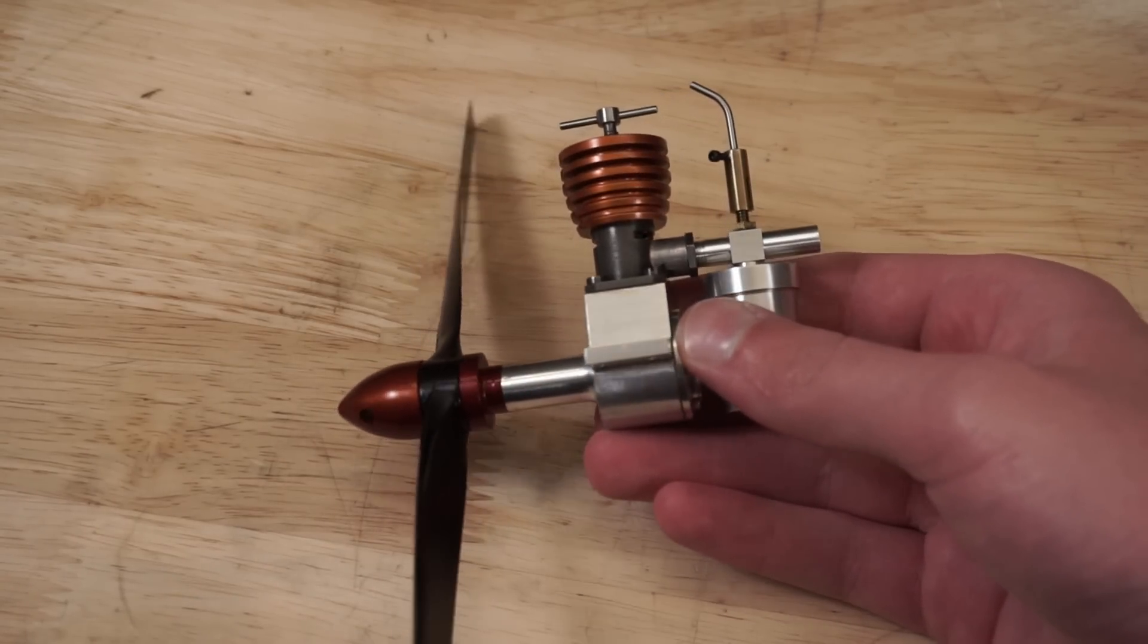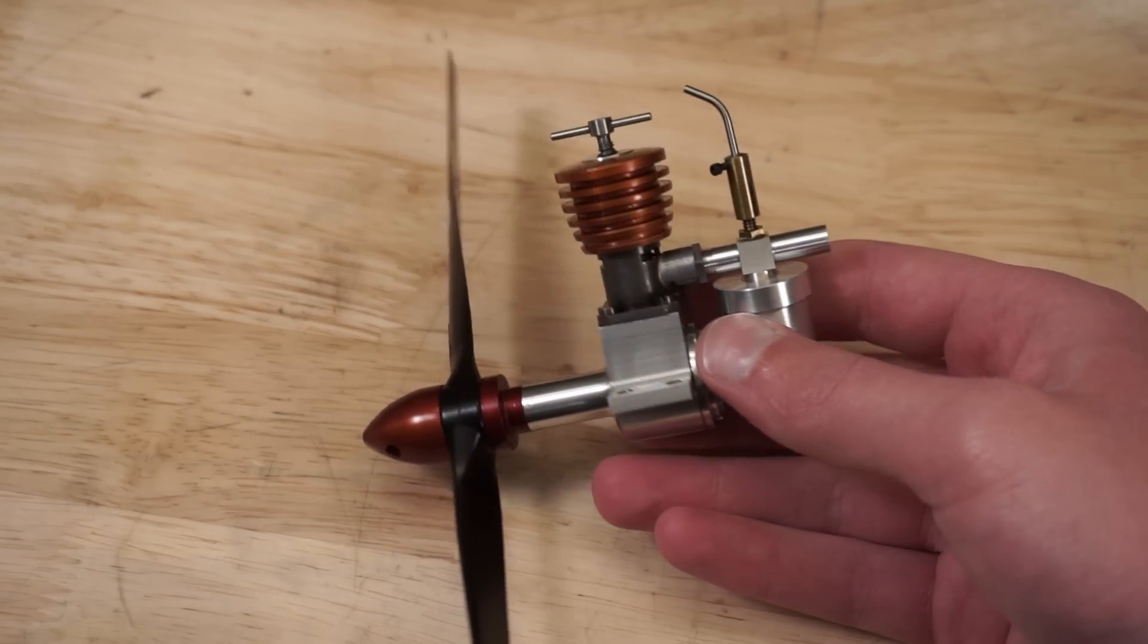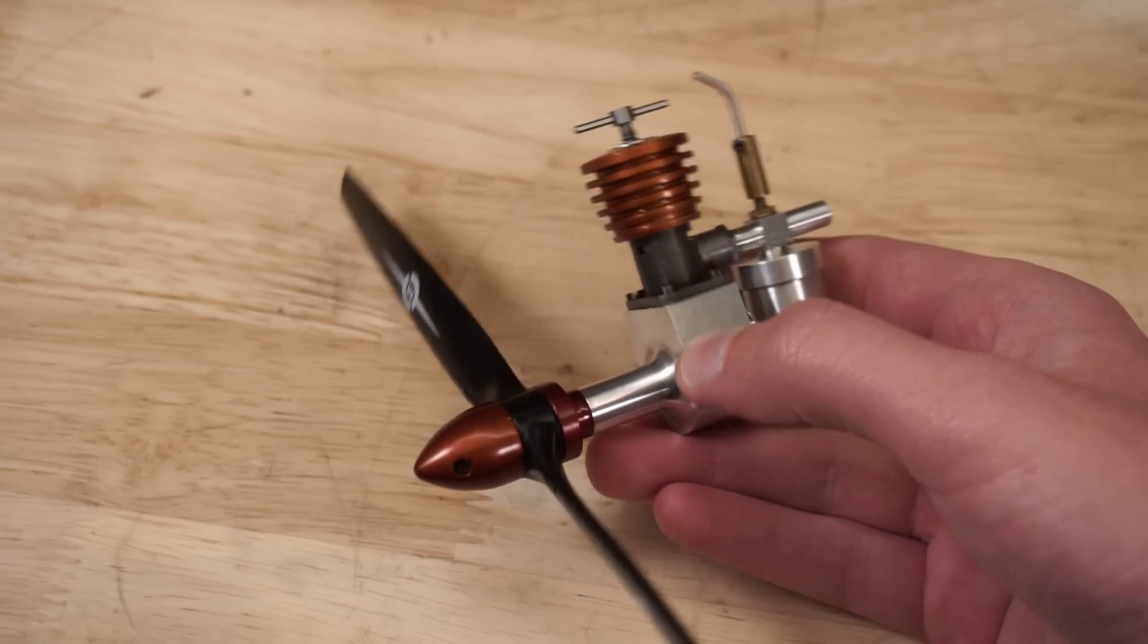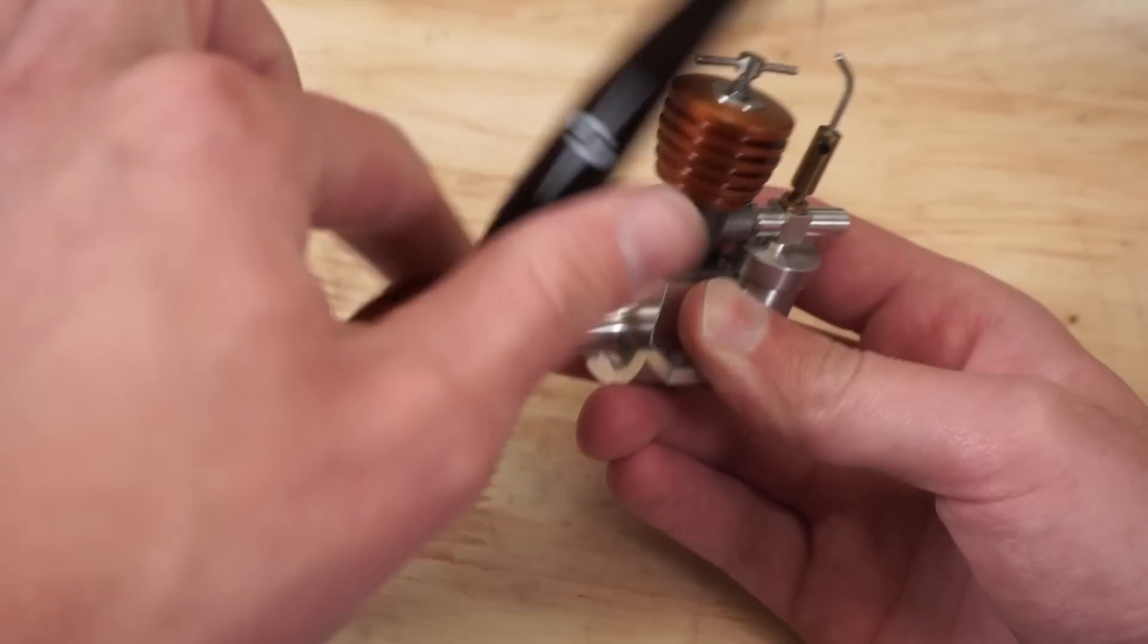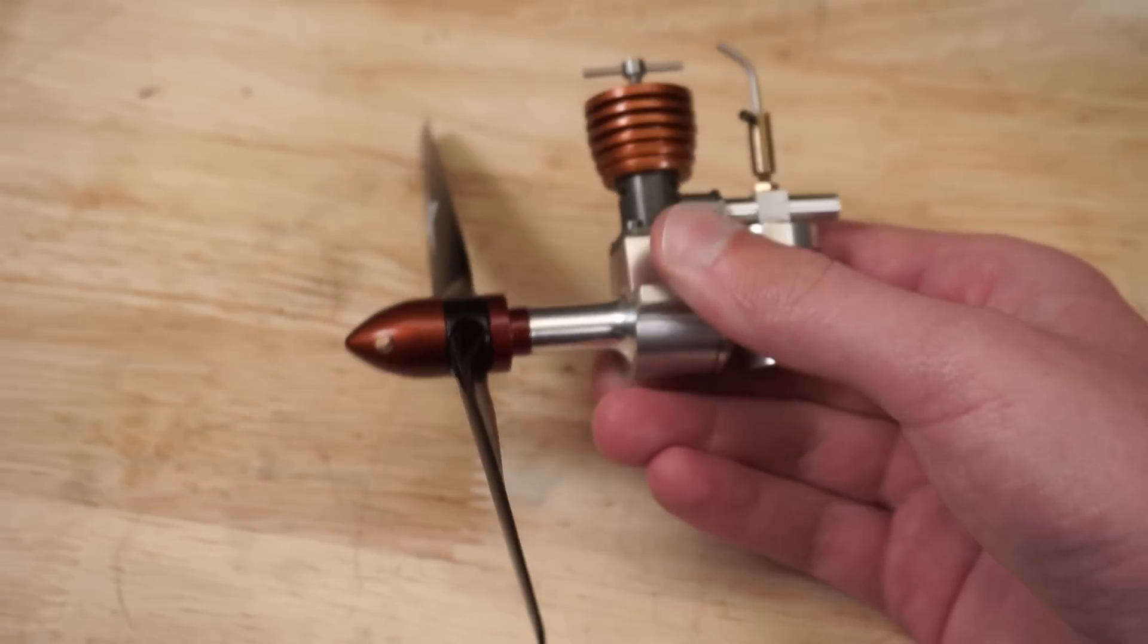In a previous video series I took a look at building one of these 1cc model airplane engines and I stuck it on the nose of one of my airplanes and went flying with maybe less than optimal results.